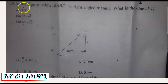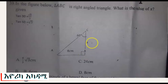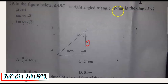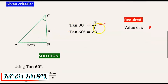Question number 39. In the figure below, triangle ABC is a right angle triangle. The value of x is to be found. Angle B is 90 degrees. The side AB is 7 centimeters, and BC is x. The tangent of 60 degrees is radical 3 over 3, and tan 60 equals radical 3.